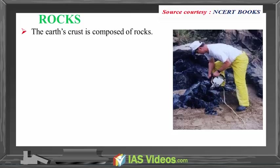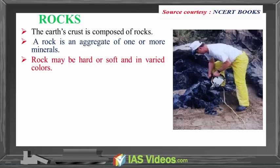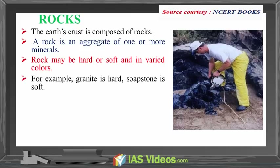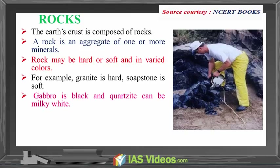Rocks. The earth's crust is composed of rocks. A rock is an aggregate of one or more minerals. Rock can be hard or soft and of varied colors. For example, granite is hard, soapstone is soft, gabbro is black and quartzite can be milky white. Rocks do not have definite composition of mineral constituents. Feldspar and quartz are the most common minerals found in rocks.